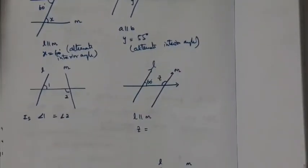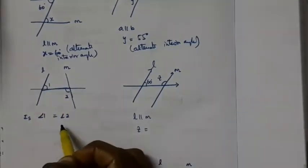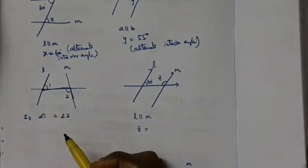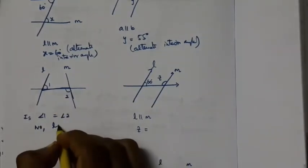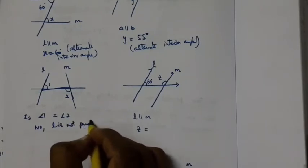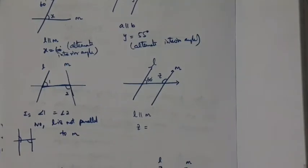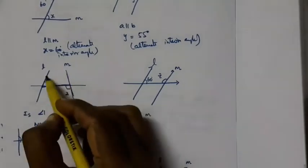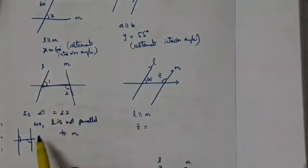The next question asks: is angle 1 equal to angle 2? You can see a Z-shape here. But angle 1 is not equal to angle 2. Why? Because L is not parallel to M. You can see that L is going in one direction and M in another — they are going to meet somewhere. These two lines are not parallel, so angle 1 is not equal to angle 2.